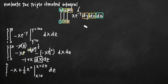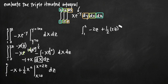Plugging in the upper limit 2z for x, we get negative 2z plus one half times 2z squared. Plugging in 0 gives 0 for both terms, so we don't need to subtract anything. Simplifying: 2z squared gives 4z squared, and dividing by 2 leaves plus 2z squared. So our integrand is negative 2z plus 2z squared, then dz.